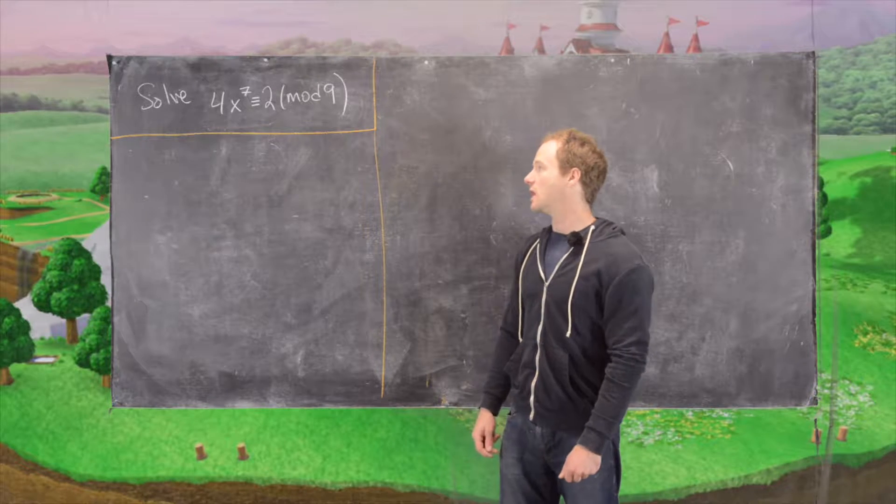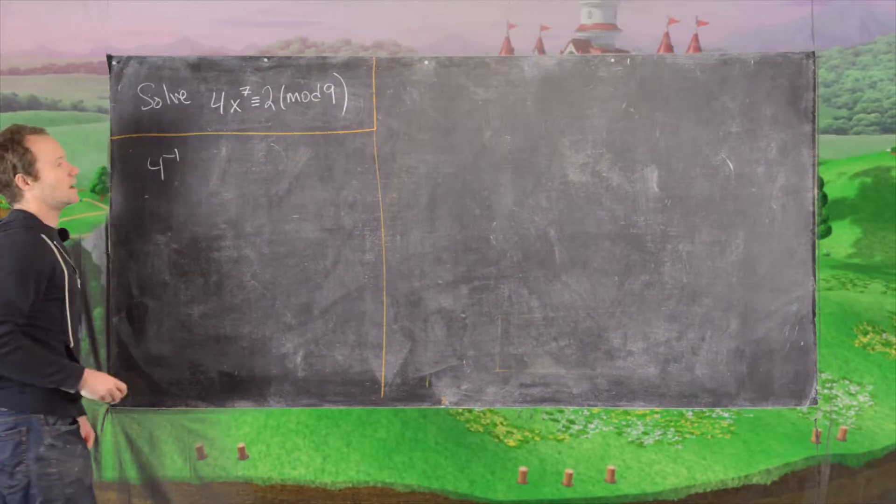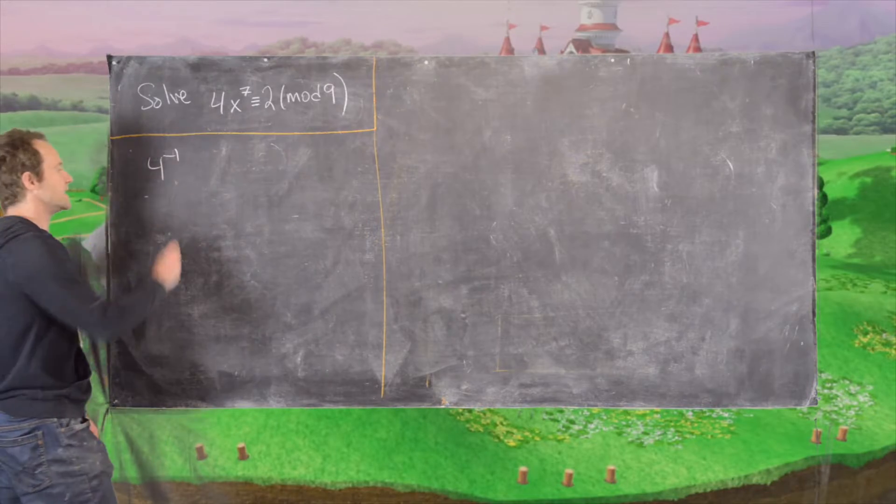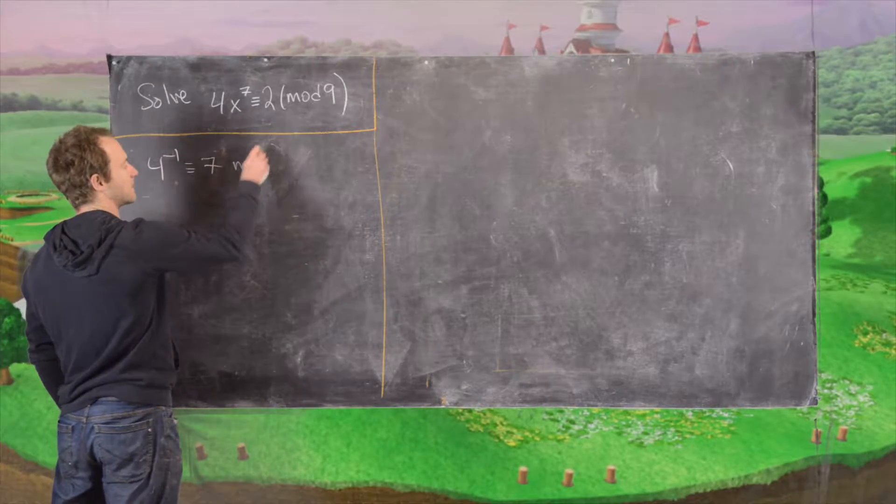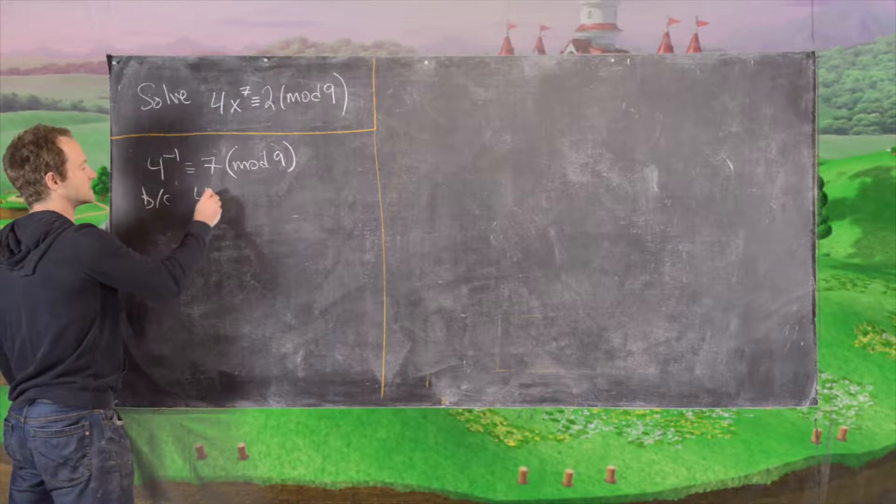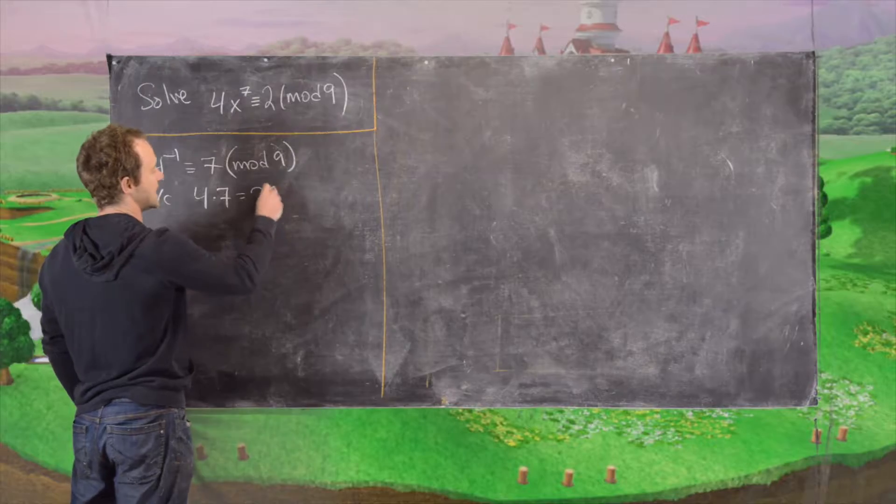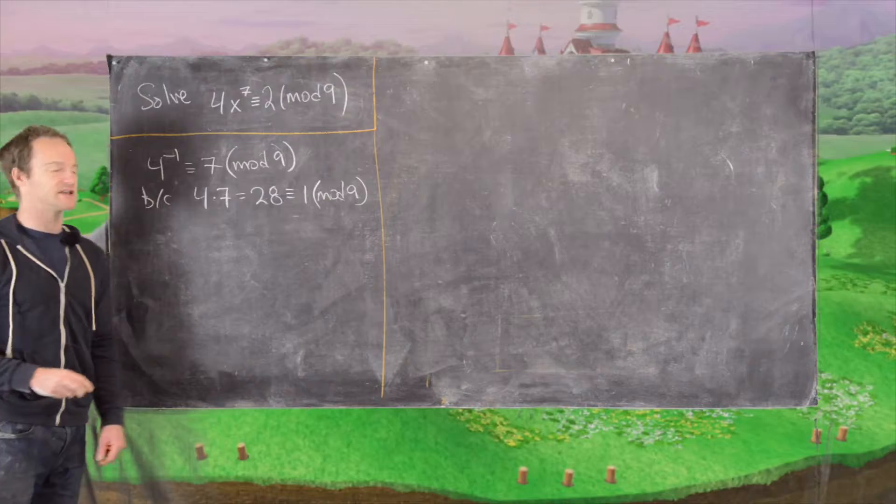And so now notice first of all we'll use the fact that 4 is invertible mod 9 and 4 inverse is congruent to 7 mod 9. And that's because 4 times 7 is equal to 28 which is congruent to 1 mod 9, being 1 more than 27.